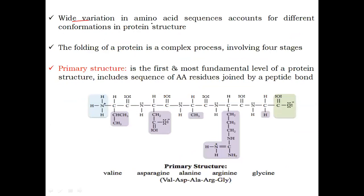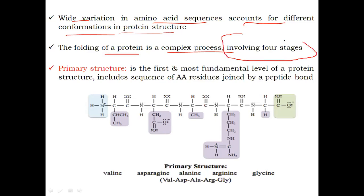Wide variation in amino acid sequences accounts for different conformations in protein structure. Protein folding is a complex process and it involves four stages.